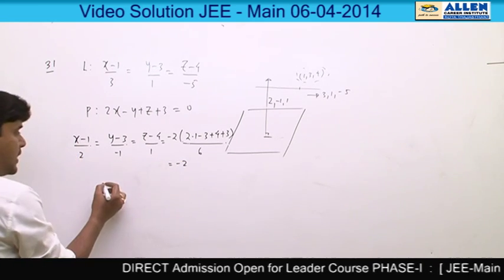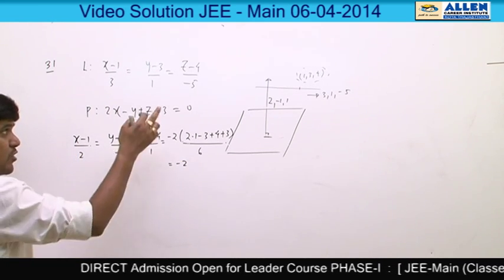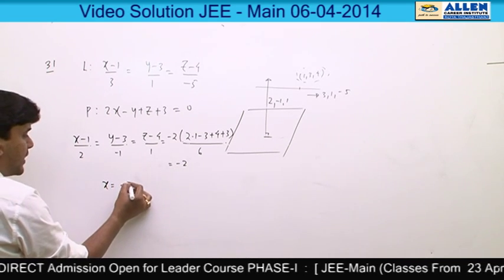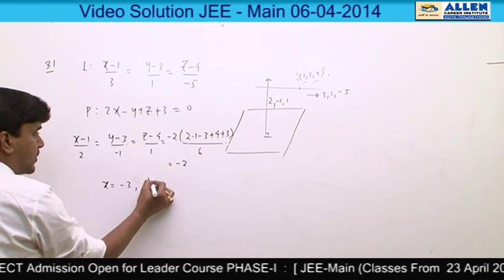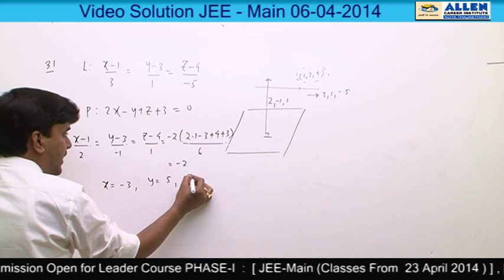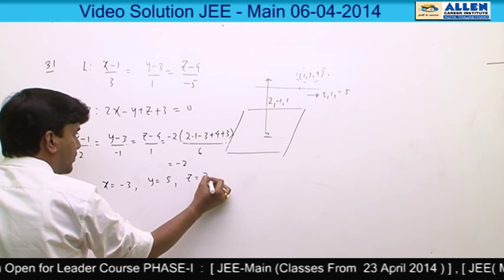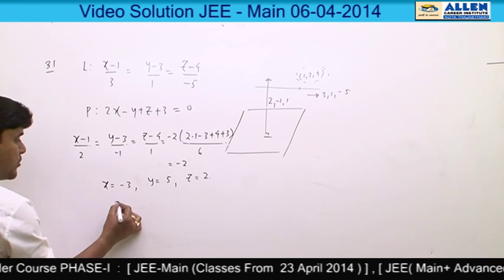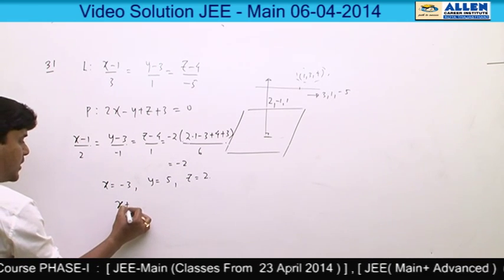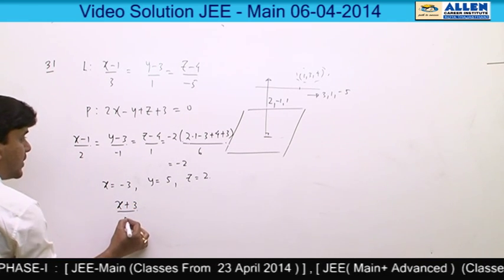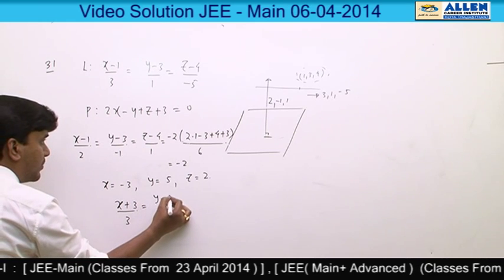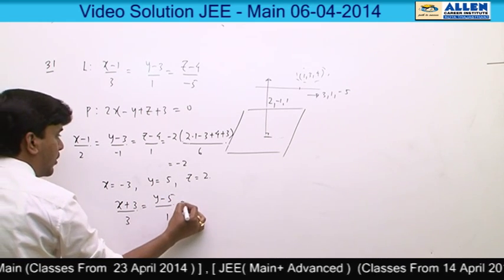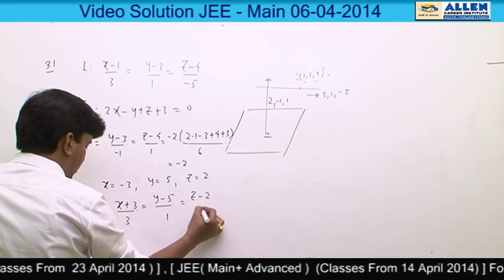We can see the reflection of the point (1, 3, 4): x = −4 + 1 = −3, y = 5, and z = 2. So the equation of the reflected line is: (x+3)/3 = (y−5)/1 = (z−2)/(−5).